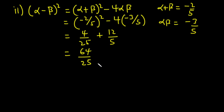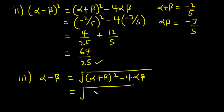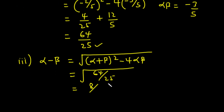So that's alpha minus beta all squared. Now let's solve for part iii. Alpha minus beta is equal to the square root of alpha plus beta all squared minus 4 alpha beta, which equals the square root of 64 over 25. The square root of 64 is 8 and the square root of 25 is 5, so alpha minus beta is equal to 8 over 5.